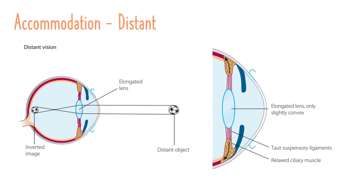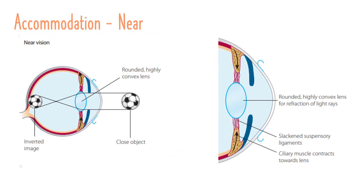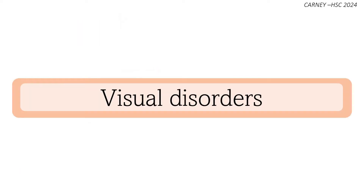Because the lens of the eye has elasticity, its curvature can be changed by the actions of the ciliary muscles and suspensory ligaments. When the eye views distant objects, the ciliary muscles relax, drawing the sclera back, which holds the suspensory ligaments taut. This has the effect of lengthening the lens, decreasing the curvature, and reducing refraction. To focus a clear image of a close object on the retina, the ciliary muscles contract, drawing the sclera forward and releasing tension on the suspensory ligaments. This allows the lens to become rounder, increasing curvature and refracting light to a greater degree.